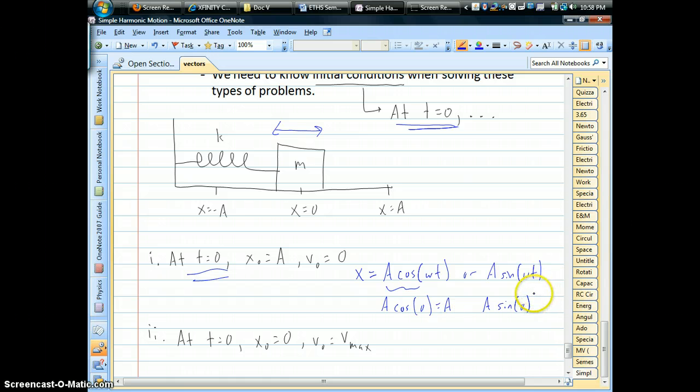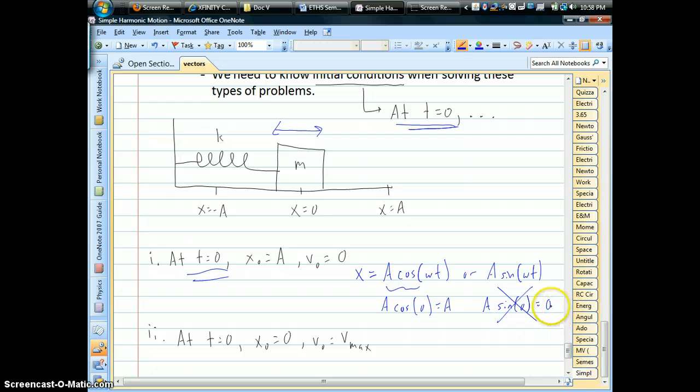Well, cosine of zero is one, so that would give you the amplitude. The sine of zero is zero, so that one doesn't work. So here's a case where we don't have to worry about a phase angle if we choose the cosine solution. This would be the appropriate solution for that particular problem.